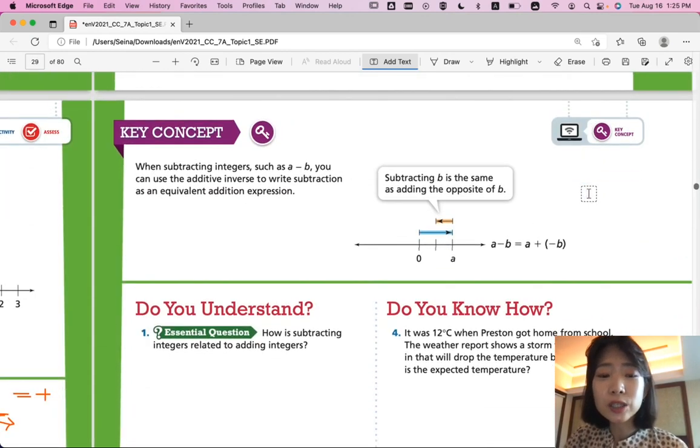When subtracting integers, such as A minus B, you can use the additive inverse to write subtraction as an equivalent addition expression. So, if you have a subtraction equation, you can change it to addition equation as well. And all the addition rules from the previous lesson apply.